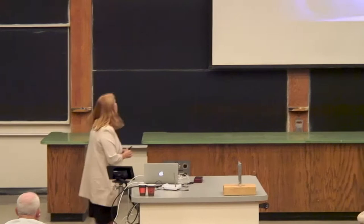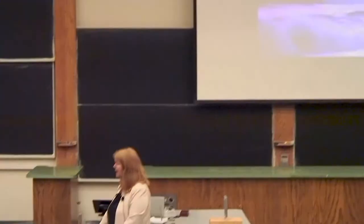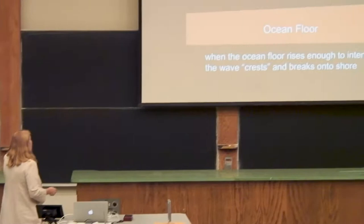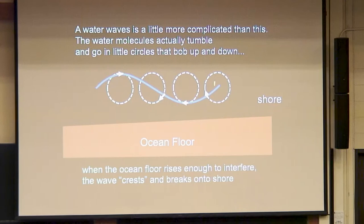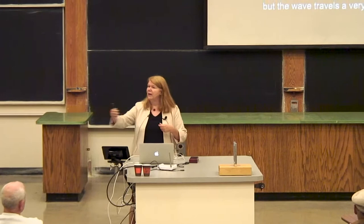Another wave I think all of you know very well is ocean waves — actually one of the reasons I'm in physics is because I absolutely love ocean waves. Ocean waves are a little more complicated: the water molecules are actually tumbling. If you pick one spot, it bobs up and down with time. When the ocean floor rises enough to interfere with this tumbling, your wave will crest — that's why your wave ends up coming up and flipping over as you get to the edge of the beach. In the middle of the ocean, the water doesn't actually go very far; it's just tumbling, but the wave itself is traveling away.